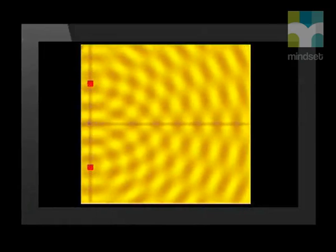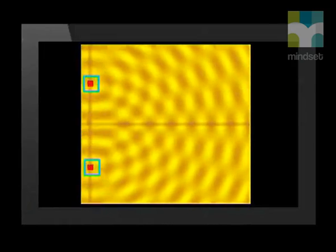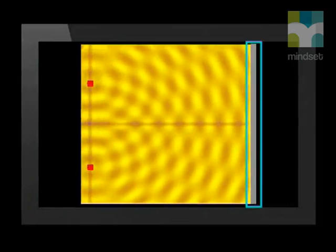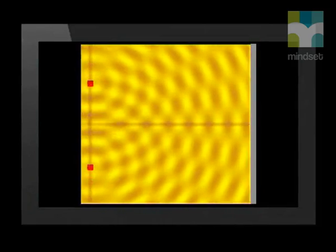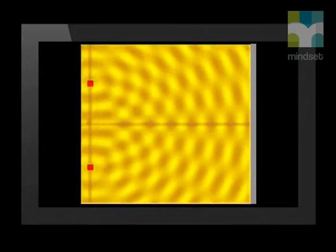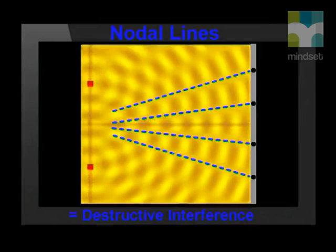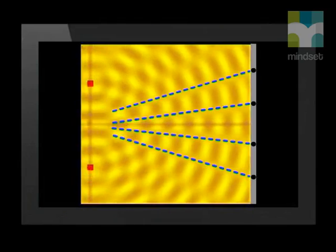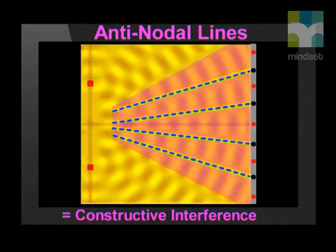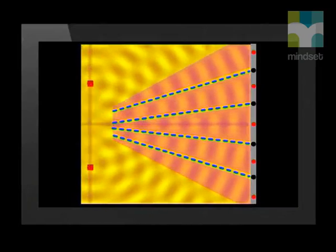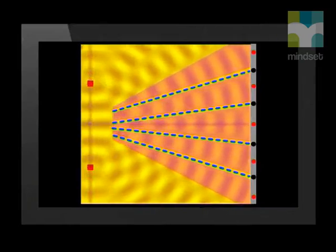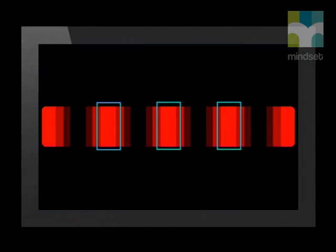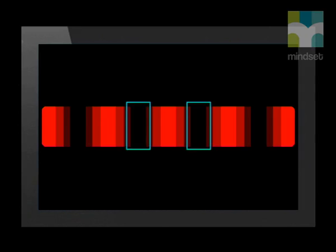Let's go through that again using this computer simulation. These two red squares are point sources of waves. Now imagine that we put a screen upright at the end of the ripple tank. Now let's run the simulation. We can mark the screen to show where the nodal lines cross it. These black dots mark places where the nodal lines meet the screen and destructive interference happened along the line of the screen. These red dots mark places where the antinodal lines of constructive interference meet the screen. At the places where constructive interference happens, the screen receives a lot of energy from the wave and the screen is bright. And at places where destructive interference happens, the screen receives little energy from the wave.